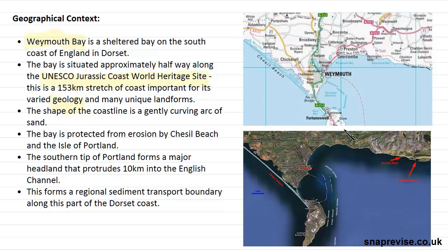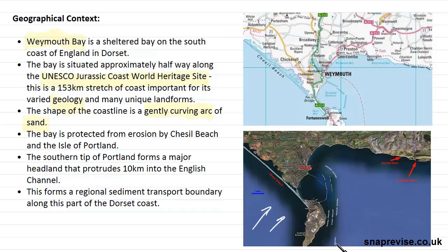Looking specifically at the Weymouth Bay area, the shape of the coastline is a gently curving arc, and the beaches here are made of sand. As mentioned earlier, the bay is protected from erosion by Chesil Beach and the Isle of Portland. Most currents are coming from a northerly or easterly direction, and on this beach we have longshore drift which has created the island here. This area in the bay is very much sheltered from any currents, whereas the beach further along will be susceptible to longshore drift, but Weymouth Bay itself is very much sheltered.